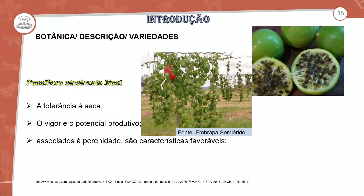A Passiflora cincinnata master tem tolerância à seca como uma das suas características. Em relação à produção do maracujá, existem híbridos que favorecem diferentes condições: alguns mais tolerantes à disponibilidade hídrica, outros mais susceptíveis a questões de umidade, e outros que apresentam características sobre palatabilidade e perenidade — características favoráveis encontradas dentro da Passiflora cincinnata master.